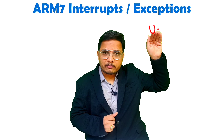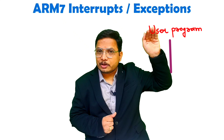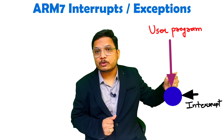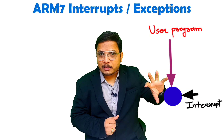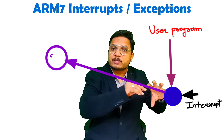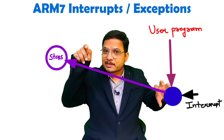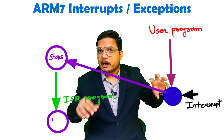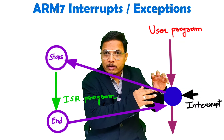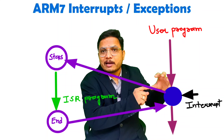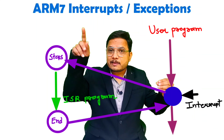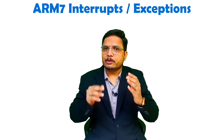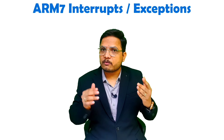For example, the user is executing one main program. While the user is executing the main program, if an interrupt comes, ARM7 will have to give service to this interrupt. ARM7 will perform some steps, then execute the interrupt service routine program. Once the interrupt service routine program is completed, ARM will have to come back to the main program at exactly the location where the interrupt came. So this is referred to as the interrupt service routine, and a few steps are happening that you need to understand.